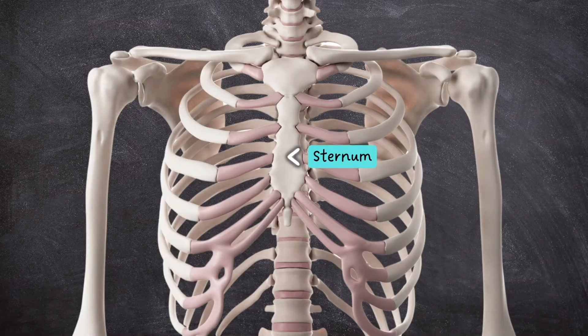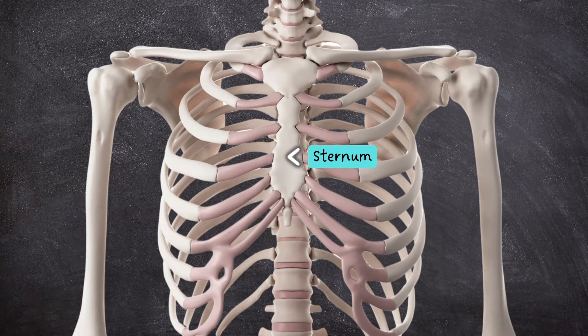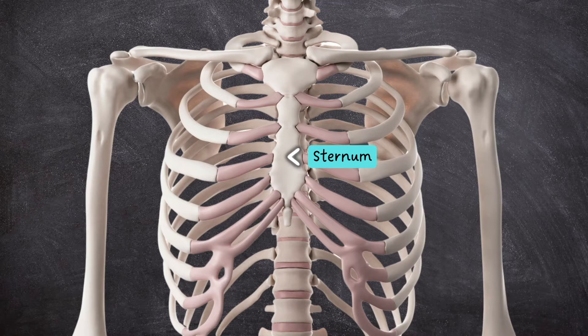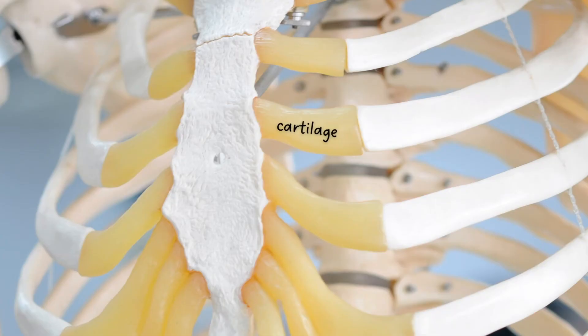The sternum, or breastbone, is a flat bone that assists in protecting the organs in the chest, but is also connected to the ribs by cartilage, forming the slightly movable joints that allow the ribcage to rise and fall.